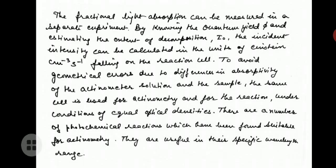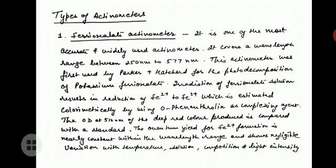There are a number of photochemical reactions which have been found suitable for actinometry, useful in specific wavelength ranges. The first type is the ferrioxalate actinometer. It is one of the most accurate and widely used actinometers, covering a wavelength range between 250 nm to 577 nm. This actinometer was first used by Parker and Hatchard for the photodecomposition of potassium ferrioxalate. Irradiation of the ferrioxalate solution results in reduction of Fe³⁺ to Fe²⁺, which is estimated colorimetrically using